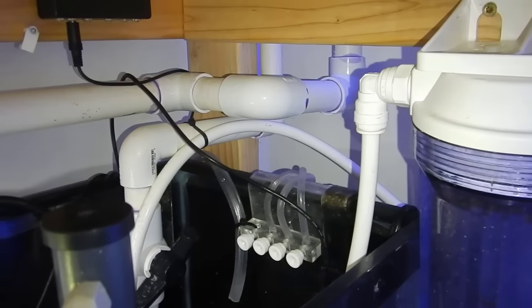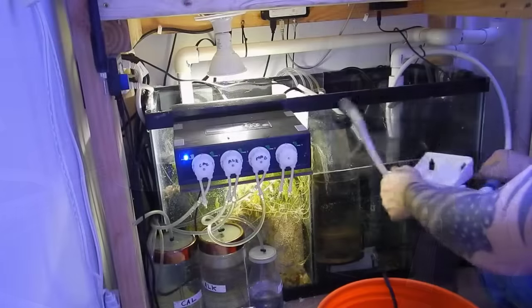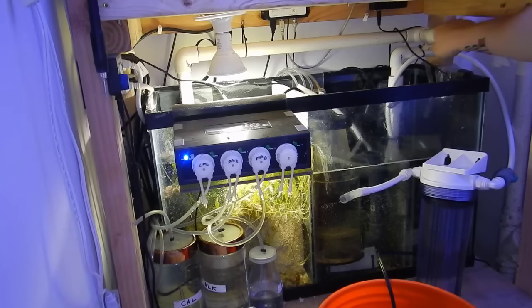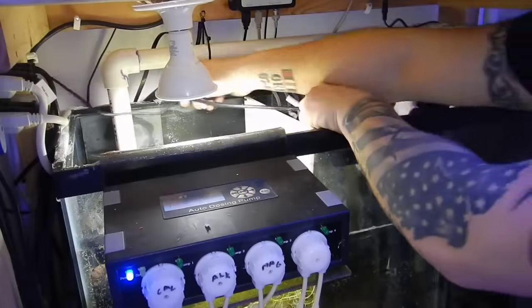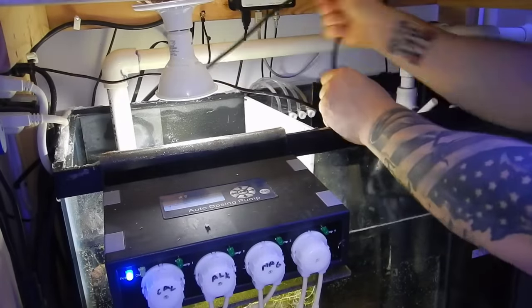Before we get into the build I briefly want to talk about what type of algae scrubber I'm going with and how I plan on plumbing it into the system. Now there are two types of algae scrubbers that I know of. There is the waterfall which I'm going with and the underwater version. The reason why I went with the waterfall version was the fact that it was easier to install, it required less parts and at the end of the day if you're doing DIY stuff simpler is definitely better, at least in my opinion.